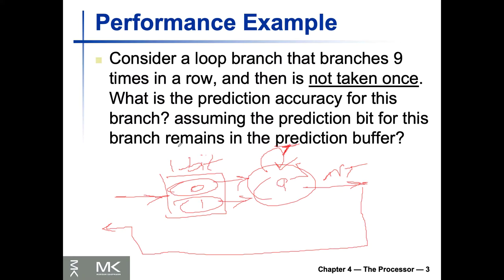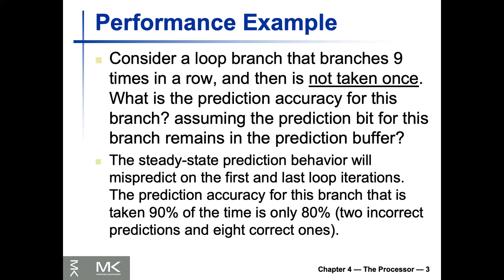We set our one-bit predictor to stay in the loop for nine times. After the ninth time, on the tenth time the predictor says stay in the loop again, which is wrong, so we have to set it back and exit. On average, with a one-bit predictor you pay the price twice — one for entry and one for exit. So the steady-state predictor will mispredict on the first and the last loop iteration.